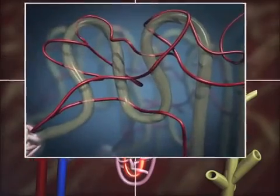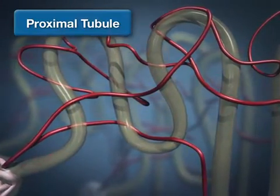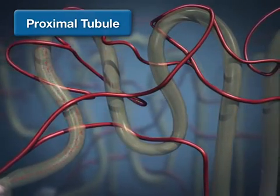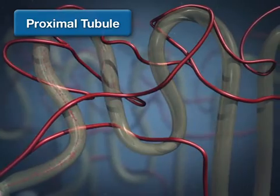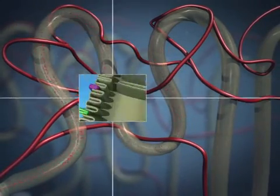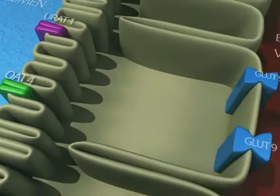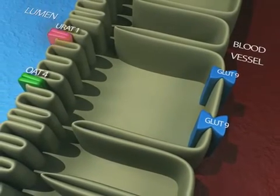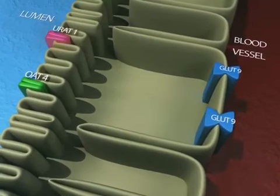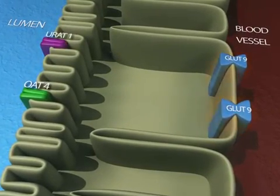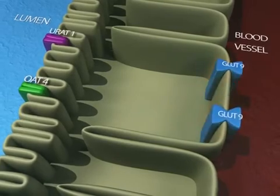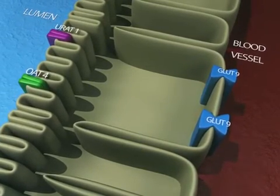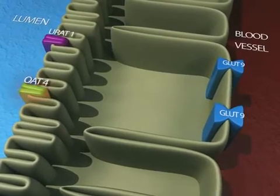Like other small metabolites, uric acid is removed from circulating blood via glomerular filtration, after which approximately 90 percent is net reabsorbed in the proximal tubule. The primary transporters responsible for the tubular reabsorption of uric acid are urate anion exchanger 1, or URAT1, facilitative glucose transporter 9, or GLUT9, and members of the organic acid transporter family, including OAT4.